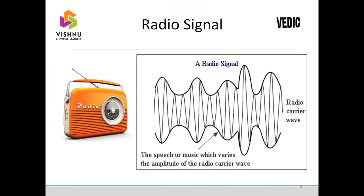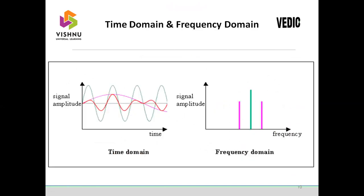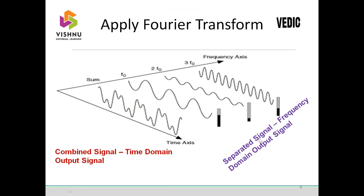Let us consider the radio signal. At the receiver end, the original audio signal is combined or mixed with a noise signal during transmission. But removal of the noise signal becomes difficult when we deal with the time domain signal. Hence, we must use Fourier transform to convert the time domain to the frequency domain signal. Now it becomes easy to remove the noise signal. After the process, we could hear radio programs without any noise signal.